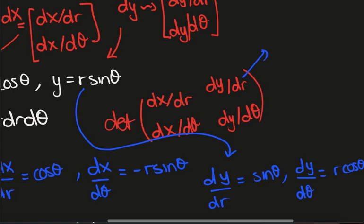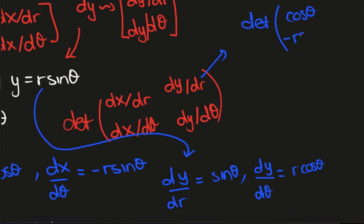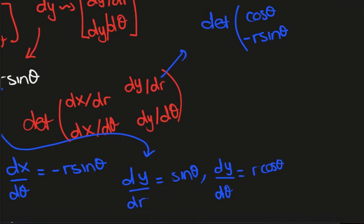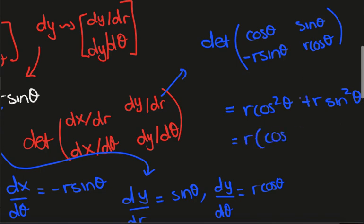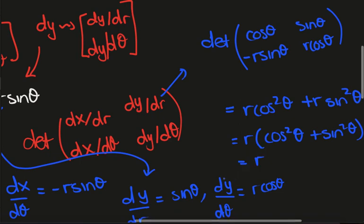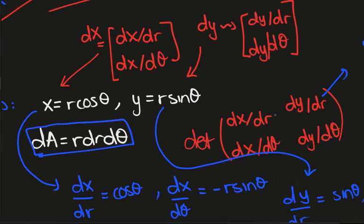Putting this into the matrix, we calculate the determinant of [[cos θ, −r sin θ], [sin θ, r cos θ]]. This gives r cos²θ − (−r sin²θ) = r cos²θ + r sin²θ = r(cos²θ + sin²θ). By the Pythagorean identity, that's just r. So that's why the r appears when we change variables — it's exactly the distortion factor given by the determinant of this infinitesimal parallelogram.